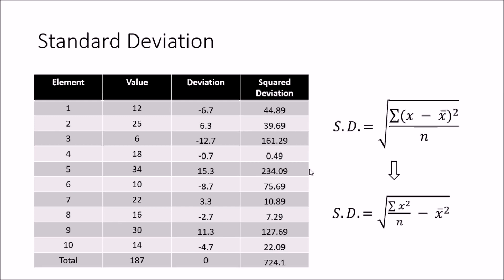That is not what I want as the deviation. Therefore, in order to get rid of the problem where positive and negative values cancel each other out, I calculate the square of the deviation. Once I square a value, whether it is positive or negative it becomes positive — so minus 6.7 becomes 44.89, and 6.3 becomes 39.69.